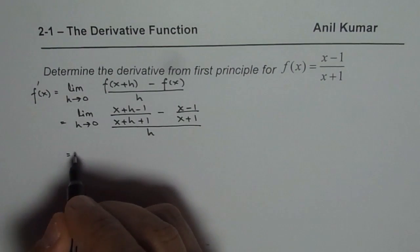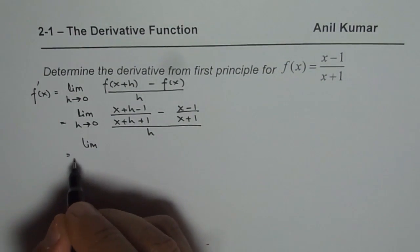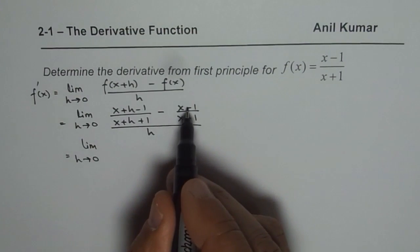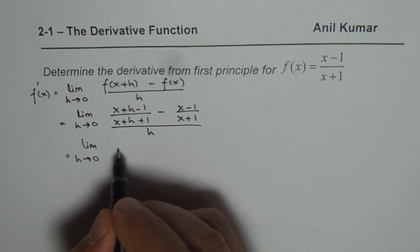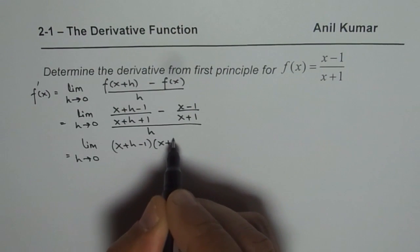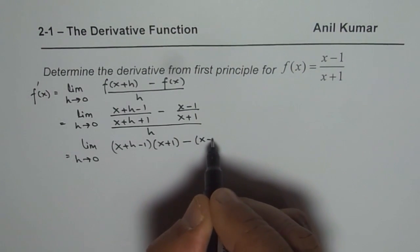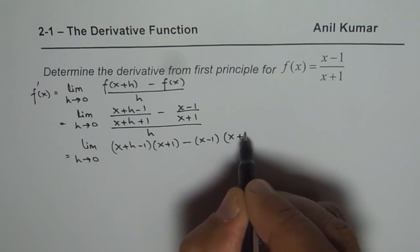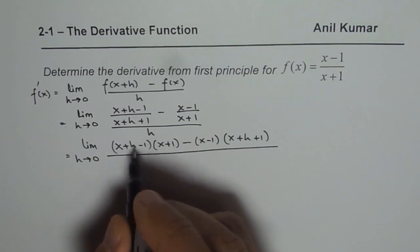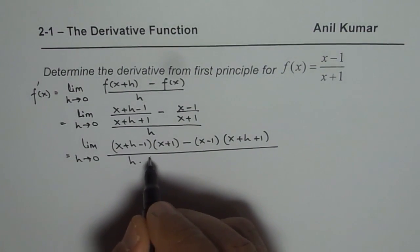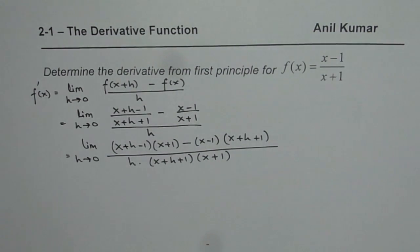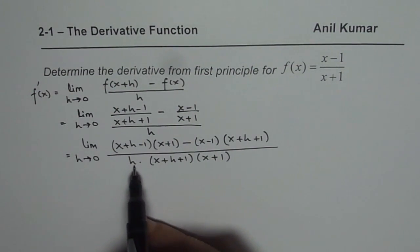To solve rational functions we take a common denominator and then simplify. Taking the common denominator, these two terms get multiplied. The first term becomes x plus h minus 1 times x plus 1, minus x minus 1 times x plus h plus 1, with the common denominator being x plus h plus 1 times x plus 1, all divided by h.